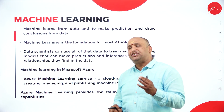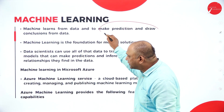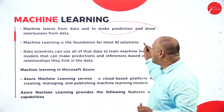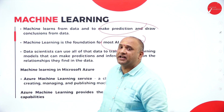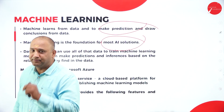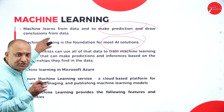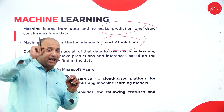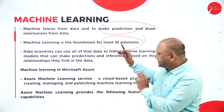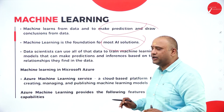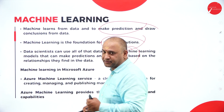Now, what is a machine learning system? Machine learning learns from data and makes predictions and draws conclusions from it. Machine learning is the foundation of most AI solutions. Whatever AI solutions we talk about today, the foundation comes from there. Whatever answers you are getting in your ChatGPT or any other AI model, the base is your machine learning system.